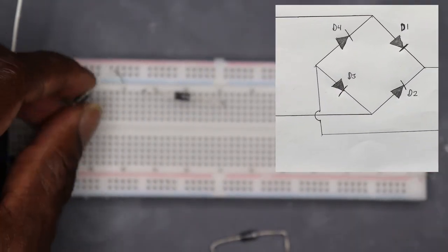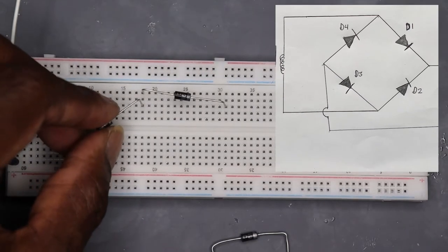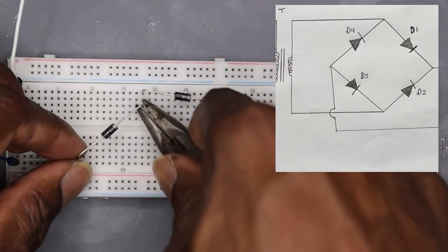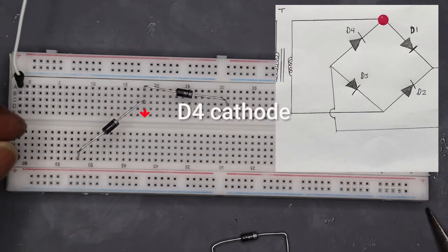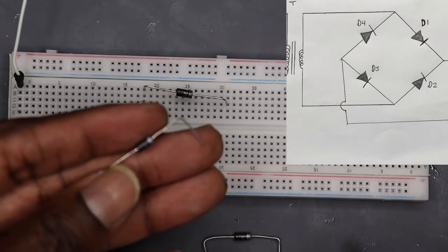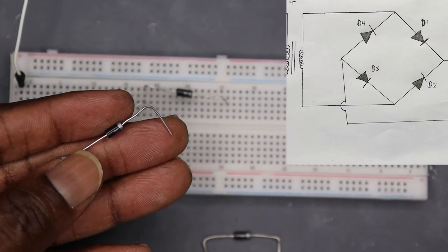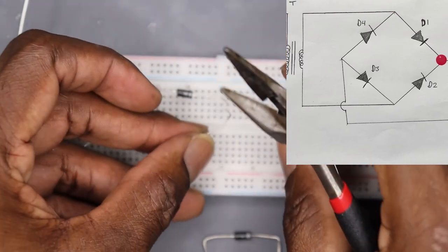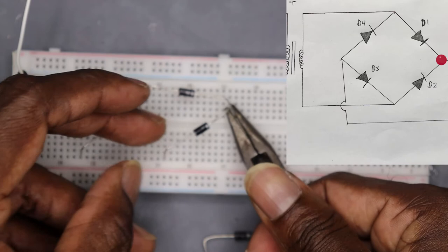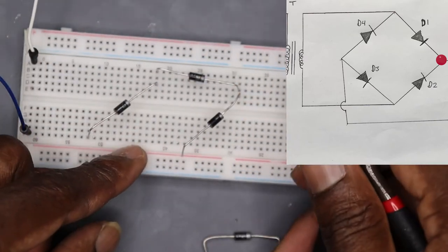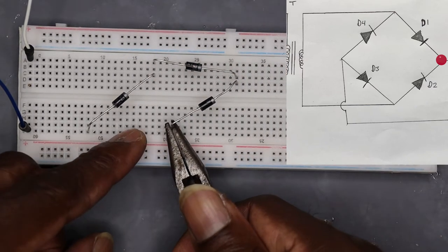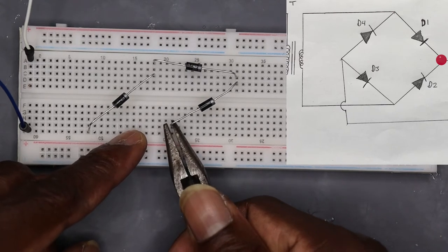Right here I'm going to connect the cathode of D4 to the anode of D1. Next I'm going to connect the cathode of D2 to the cathode of D1. Now if you notice on the drawing you will see where two cathodes are connected together. That's the connection that I just made.